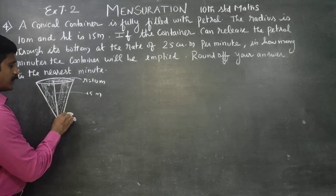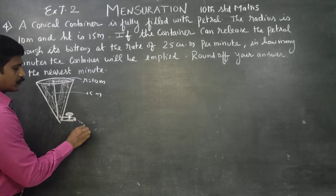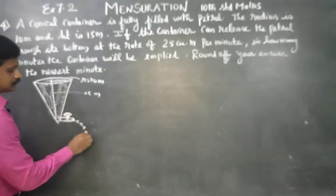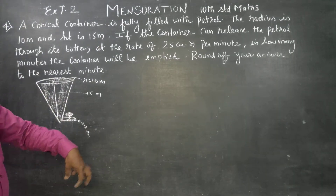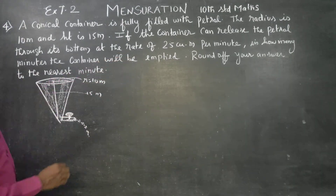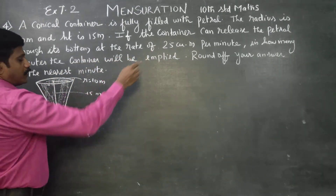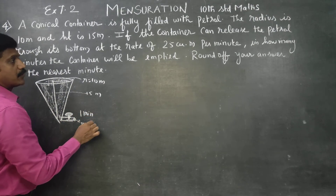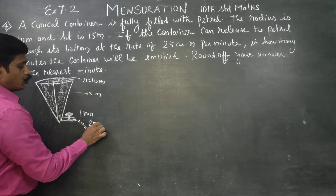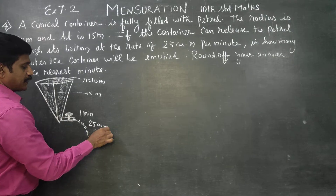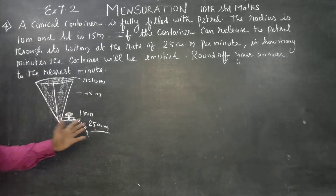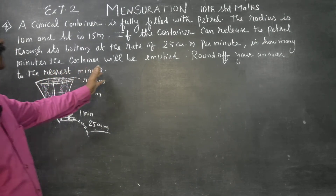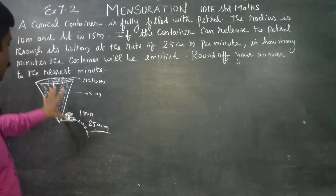In the valve, you open up to petrol — petrol comes out from the bottom. The speed of petrol coming out is 25 cubic meters per minute. In how many minutes will the container be emptied?